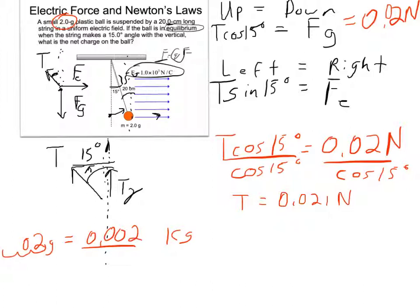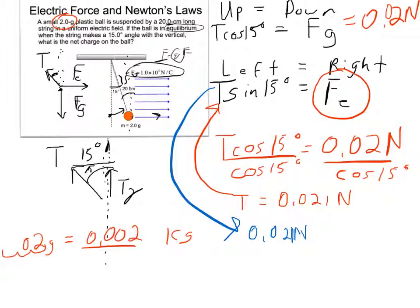And if I know that tension is 0.021 newtons, well, still looking for that electric force, Fe. So now let's put that tension into this equation. We now know tension is 0.021 newtons. That means that 0.021 newtons times the sine of 15 degrees equals the electric force. So 0.021 times sine of 15, I get that electric force, Fe, is 0.0054 newtons.